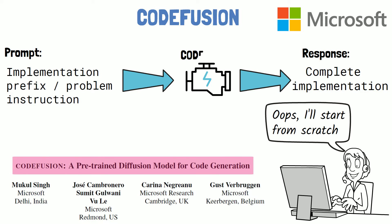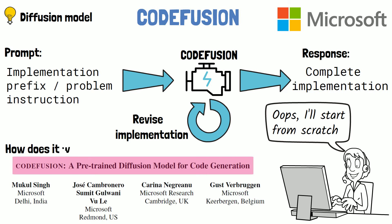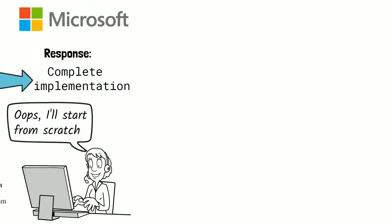So here comes CodeFusion, a code generation model presented in the paper that tackles this limitation by letting the model revise its implementation in multiple iterations. It is able to do so by being a diffusion model for code generation. In this video we'll provide a quick reminder of what diffusion models are, then explain how CodeFusion works, and finally review how CodeFusion performs based on the results in the paper.